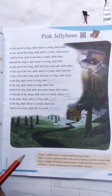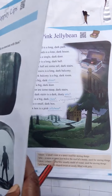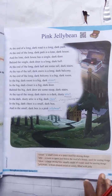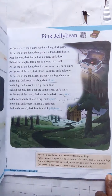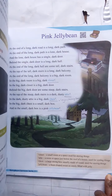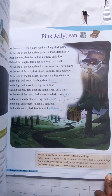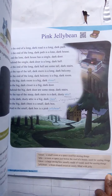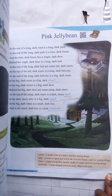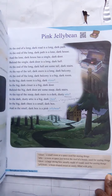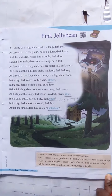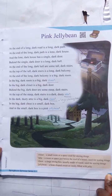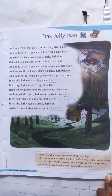Page number 15 has the poem 'Pink Jelly Bean.' This poem is related to the first lesson, 'Red Slopity Leaps.'